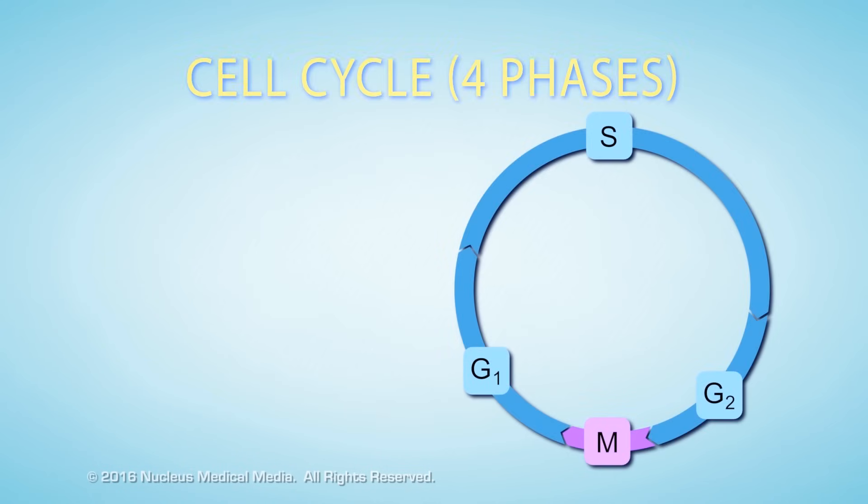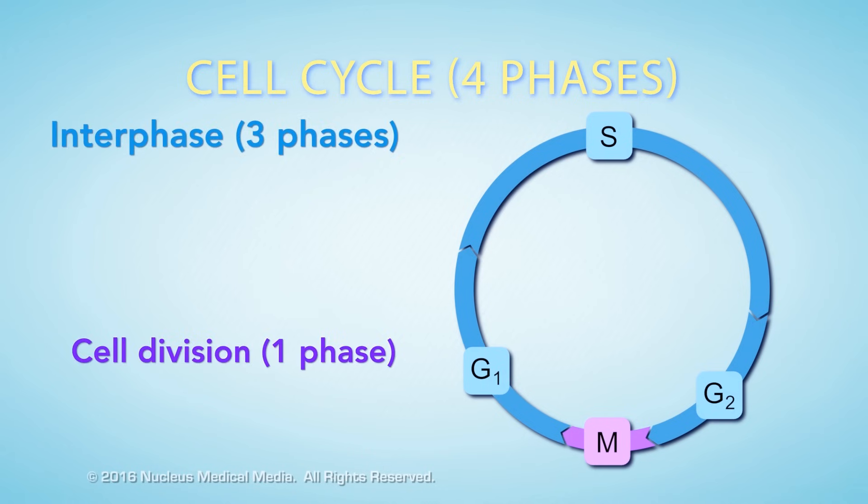Let's review. The cell cycle describes the life cycle of an individual cell. It has four phases: three in interphase and one for cell division. Most cell growth and function happen during G1.